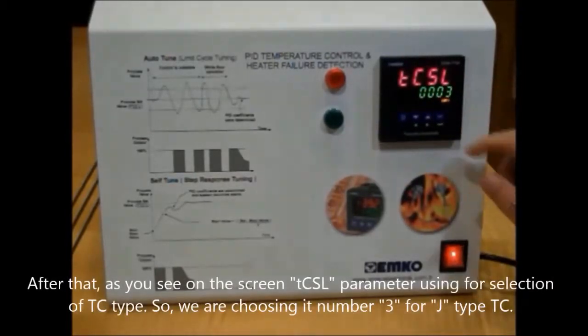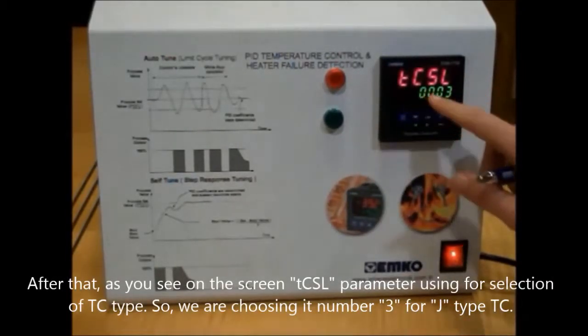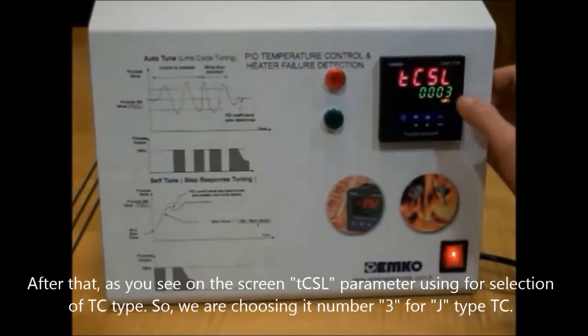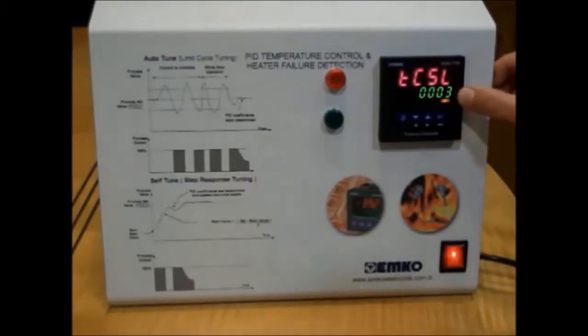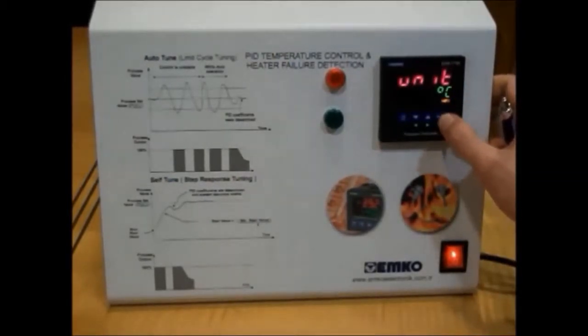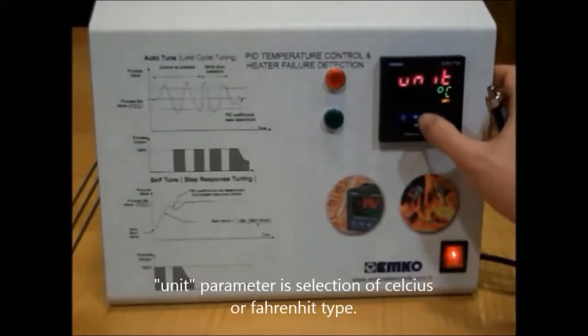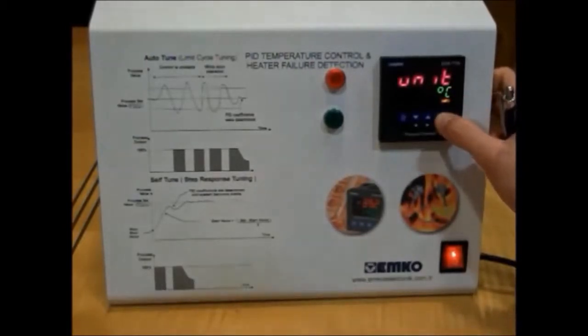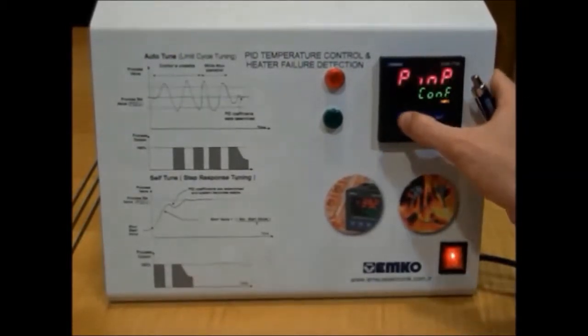When we choose number zero, we will see this parameter TCSL. This is for number three. If we choose number three, this is a G type thermocouple. And then, we can choose Fahrenheit or centigrade degrees. We selected centigrade degrees.